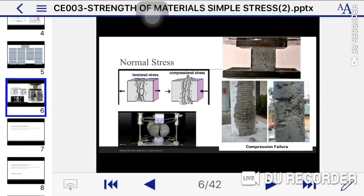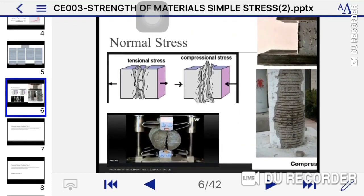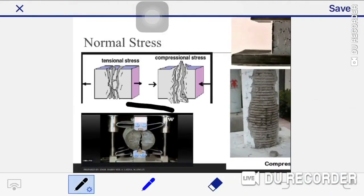Under normal stress, as you can see in the figure at the left side, we have tensile stress and compressional stress. In tensile stress, you can see the material is being pulled, and for compression stress, the material is being squeezed. At the lower part, we have a UTM or Universal Testing Machine to determine the tensile stress of the material.